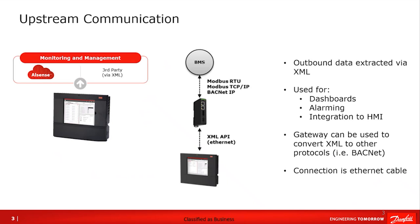The reasons that data is being extracted include dashboards — pulling in data to display history trending on case temperatures, rack pressures, and these types of things so the user can understand performance of their system. Alarming, if an alarm occurs on a system, to get notification out to the proper parties — whether a technician or contractor — so they could look into servicing the rack or system as needed. And for people looking to extract data to a higher-level device, that would also be an option through these XML commands.